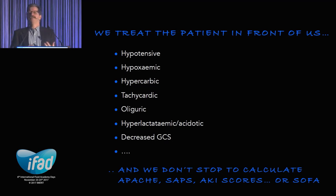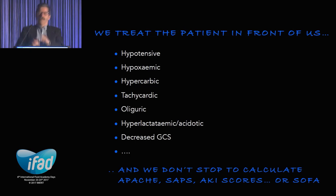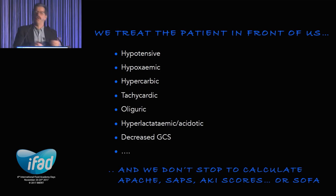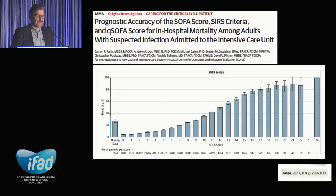You treat the patient in front of you. If they're hypoxaemic, hypotensive, or oliguric, that's what you treat. You don't do a score and then decide to treat them. The score is more useful to characterize what we're doing, operationalize it, transmit information, and look at trajectory.